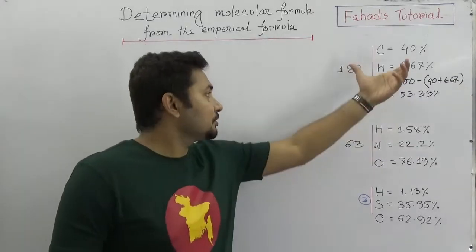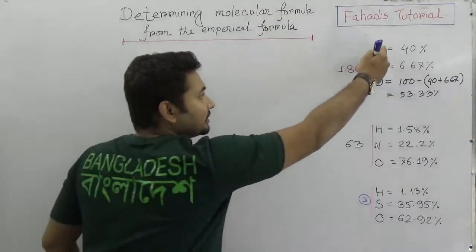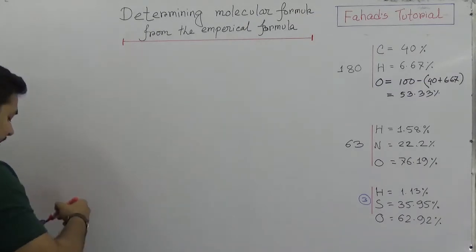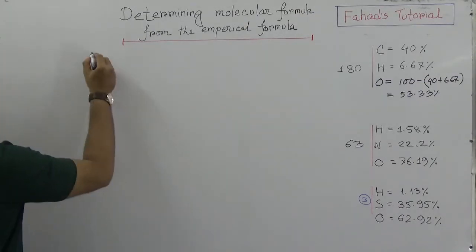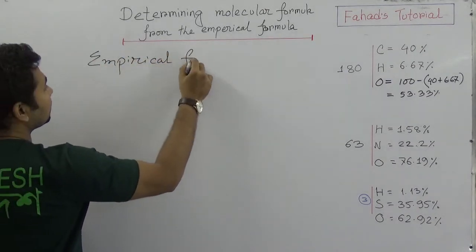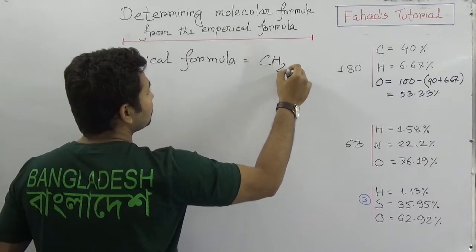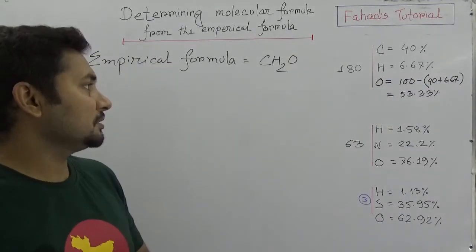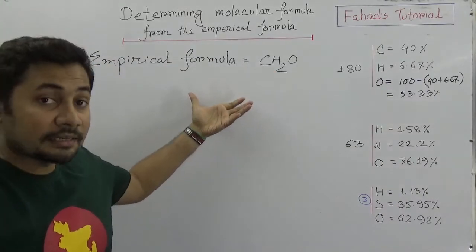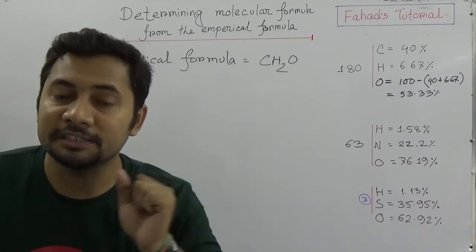In my previous class I showed the percentage composition, and from that percentage composition we can get the empirical formula. According to those percentage compositions, the empirical formula is CH2O. I already explained it in my previous video, so I am just taking it as an example. This is the empirical formula and now I need to find out the molecular formula.